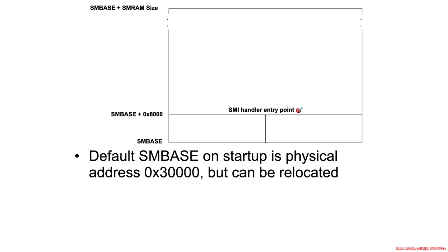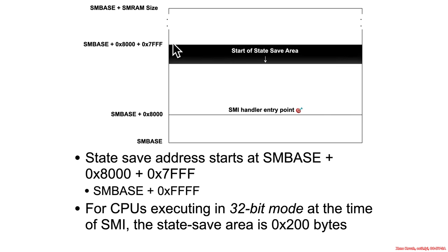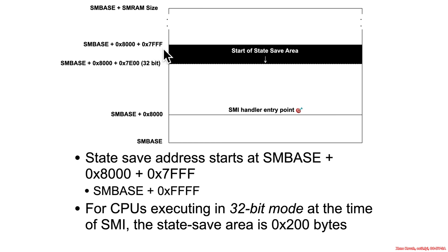So that's the first use for SMRAM: the code for the SMI handler. But there is also data stored there — specifically the pre-SMM save state. That's saved at SMBase plus 8000 plus 7FF. Intel uses this convention in their data sheets instead of just giving you SMBase plus FFFF; they say SMBase plus 8000 plus 7FF, which is really just SMBase plus FFFF.